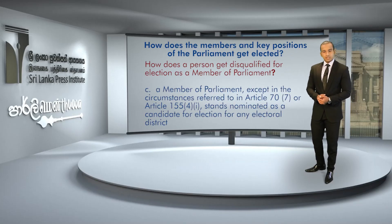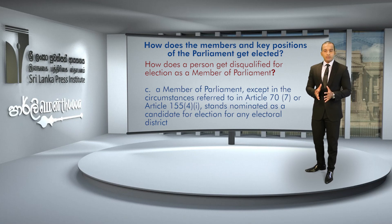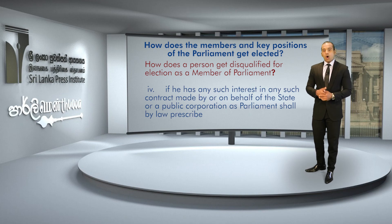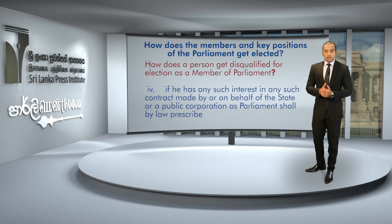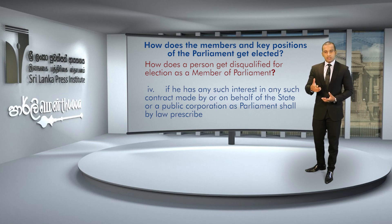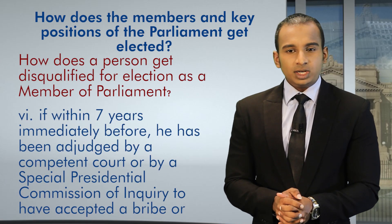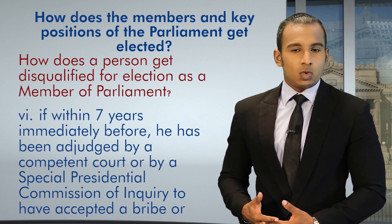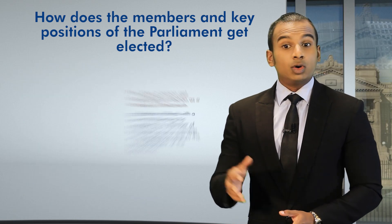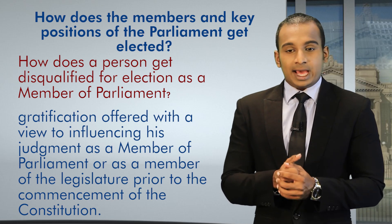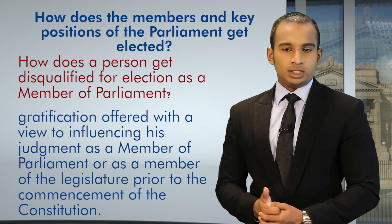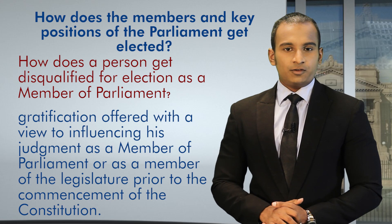Also, a Member of Parliament — except in the circumstances referred to in Article 70(7) or Article 154(4)(1) — who stands nominated as a candidate for an election for any electoral district is disqualified. If he has any interest in any contract made by or on behalf of the state or a public corporation, as Parliament shall by law prescribe, that person will be disqualified. If a person is an undischarged bankrupt or insolvent, having been declared bankrupt or insolvent, that person is also disqualified. If within seven years immediately before, a person has been adjudged by a competent court or by a special presidential commission of inquiry to have accepted a bribe or gratification offered with a view to influencing his judgment as a Member of Parliament, or as a member of the legislature prior to the commencement of the Constitution, that person too will be disqualified from contesting a parliamentary election.